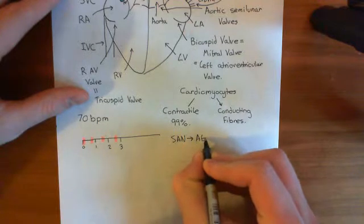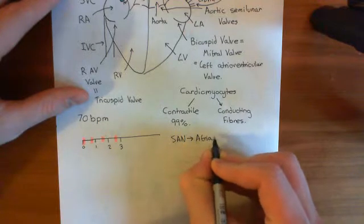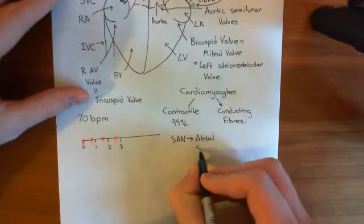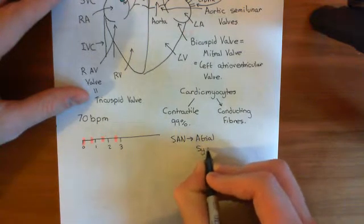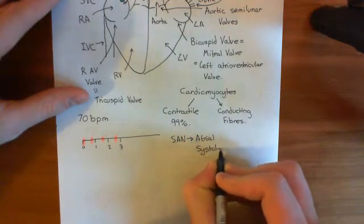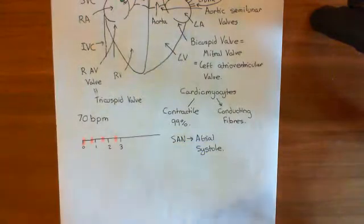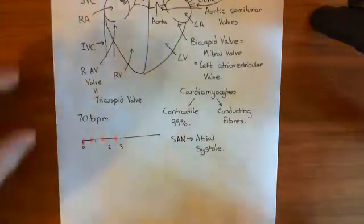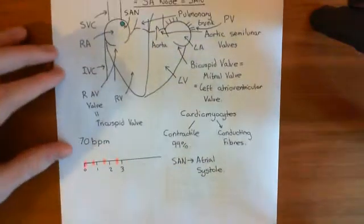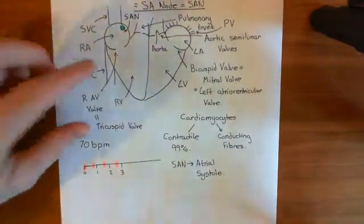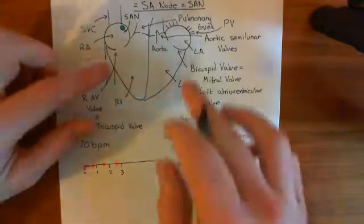Atrial systole just means atrial contraction — it's a fancy word to mean atrial contraction. And the blood gets squeezed from the atria into the ventricles.